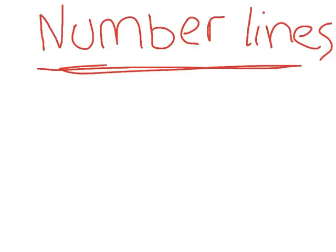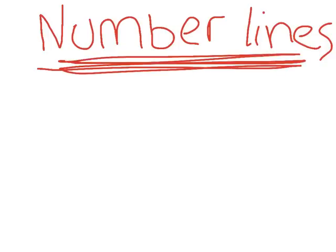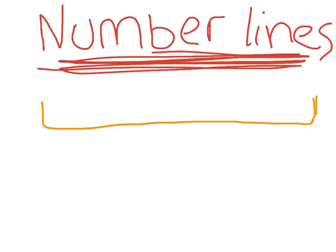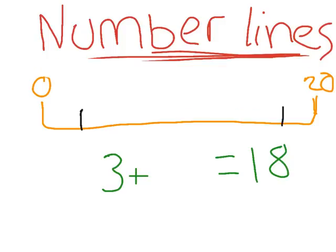Today we're going to learn about number lines. We will start at 0 and end at 20. Our example is 3 plus what equals 18.